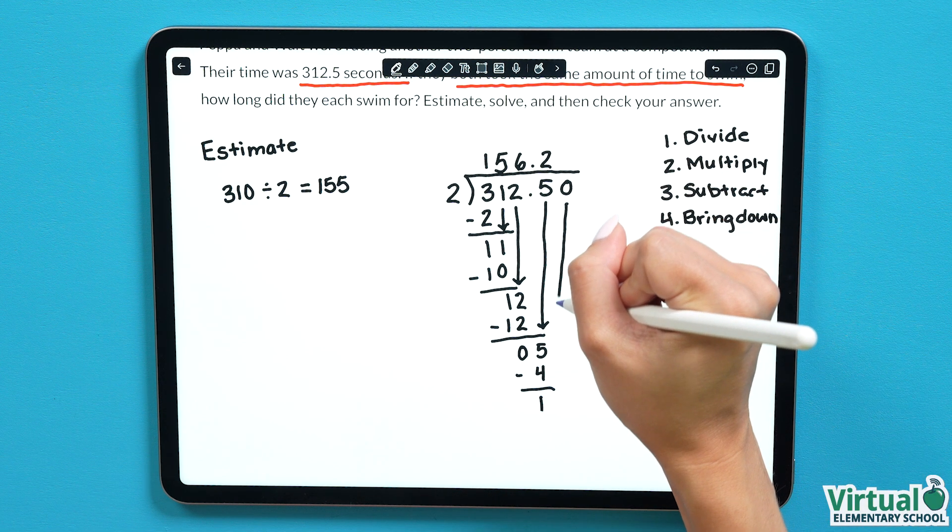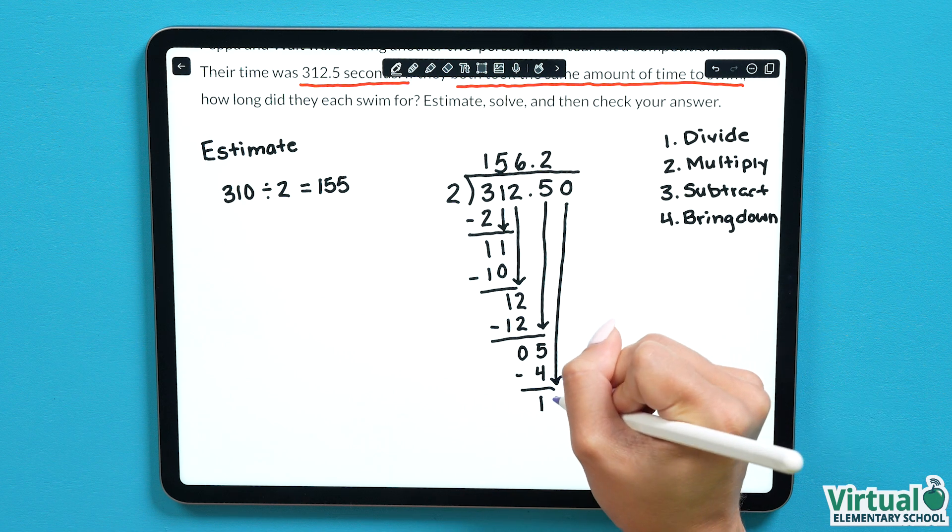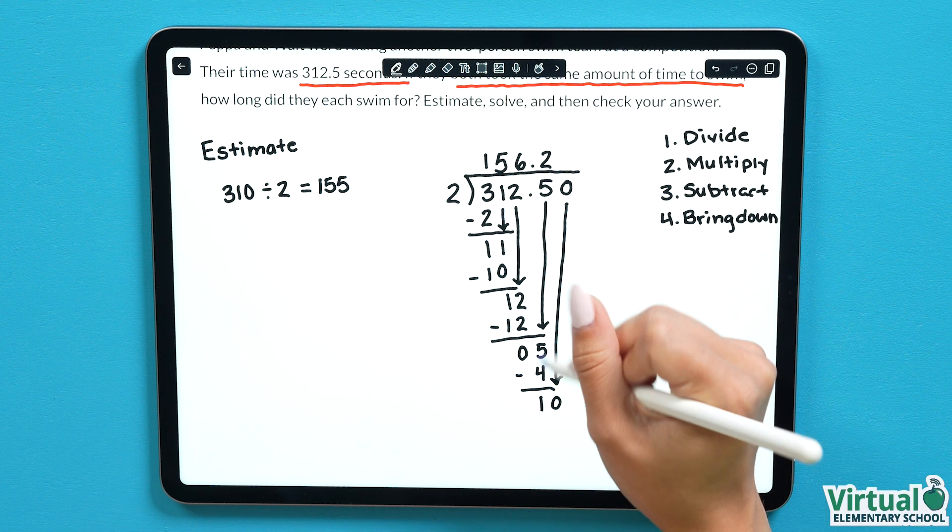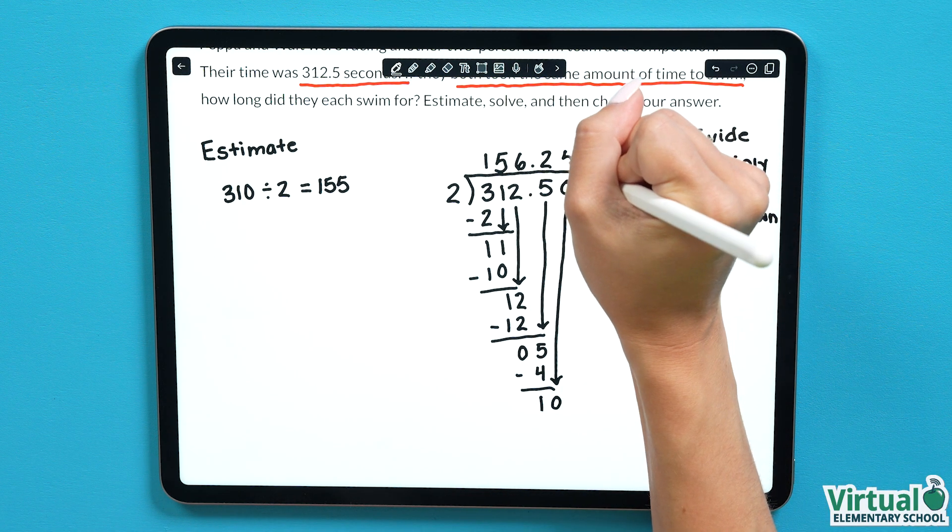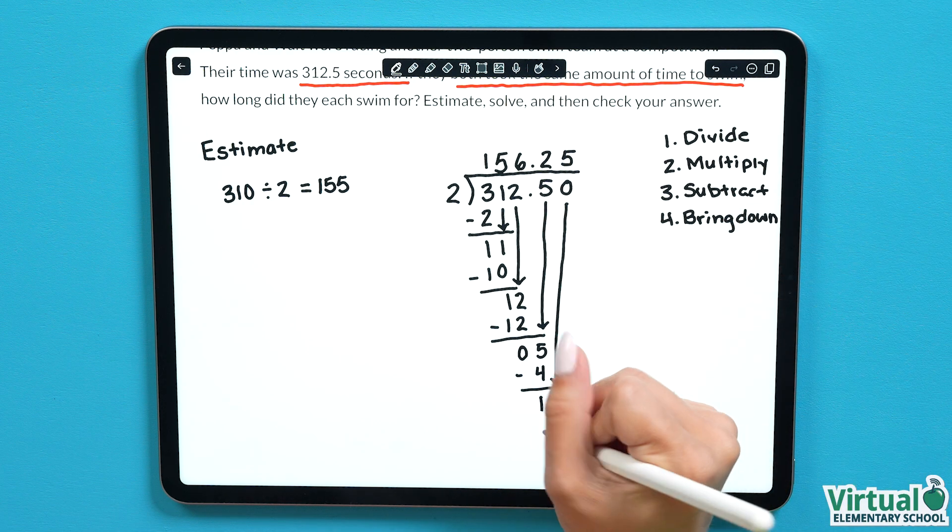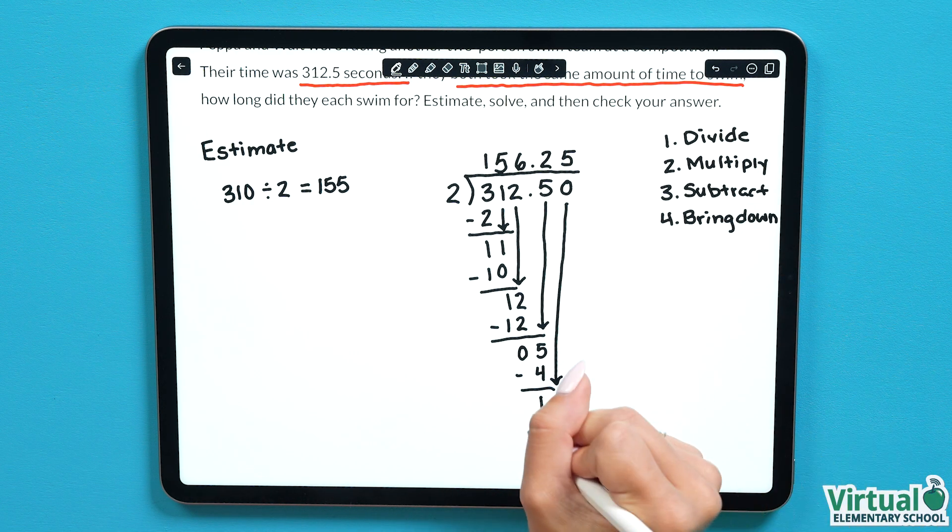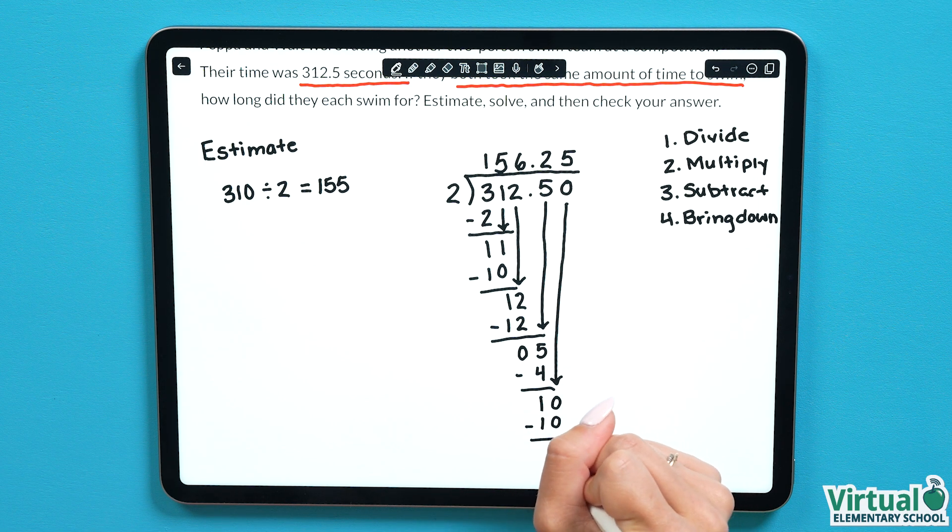Now we can bring the 0 down to work with. This gives us 10, 10 divided by 2 is 5. 5 multiplied by 2 gives us 10, and we have 10 subtract 10, which is 0.